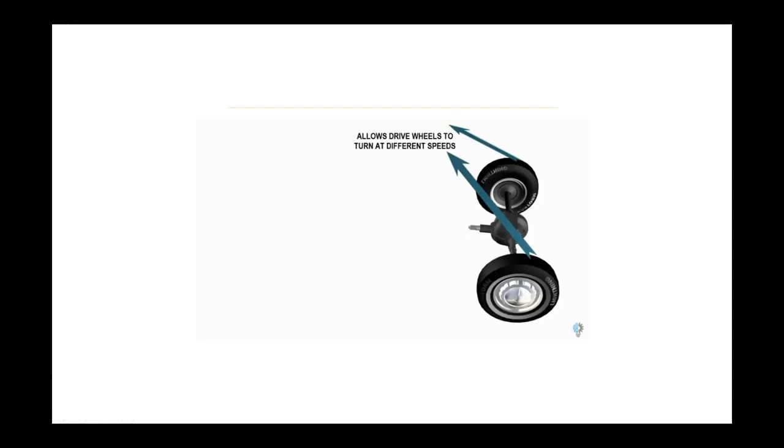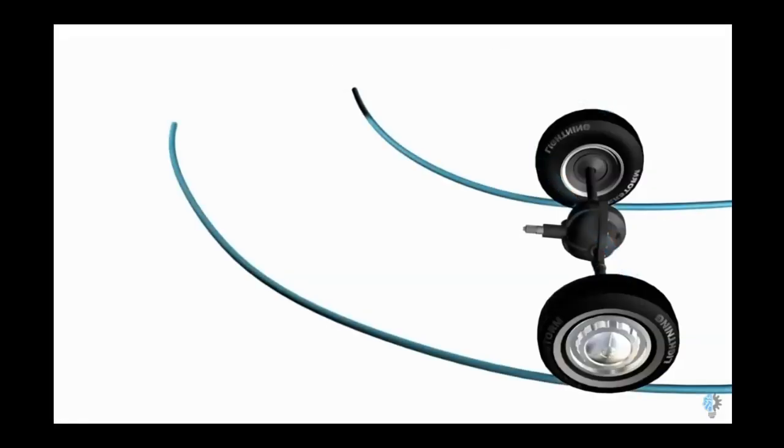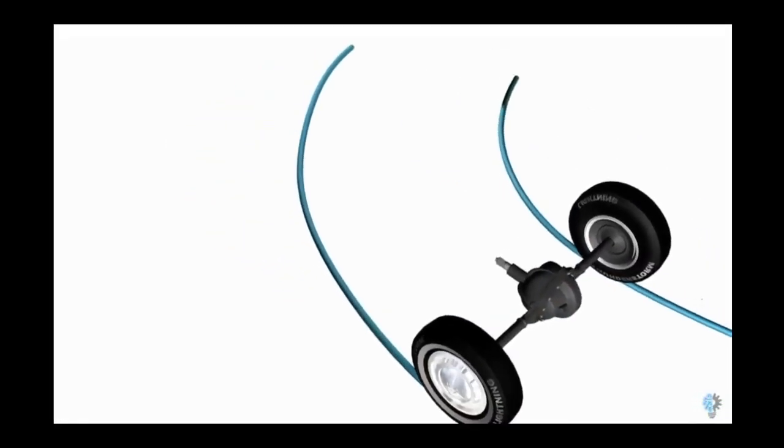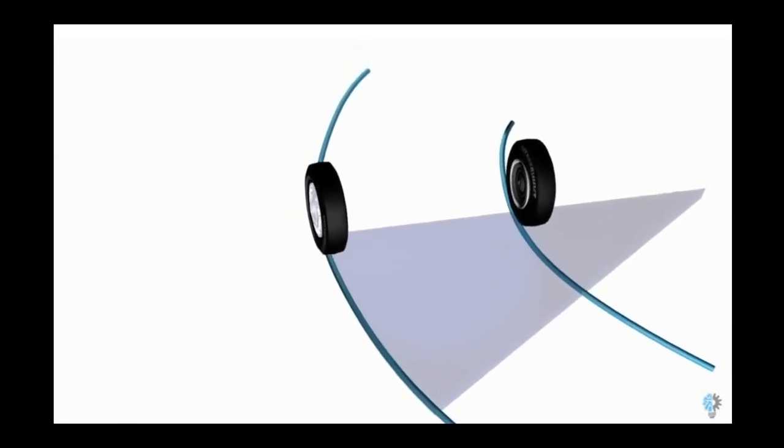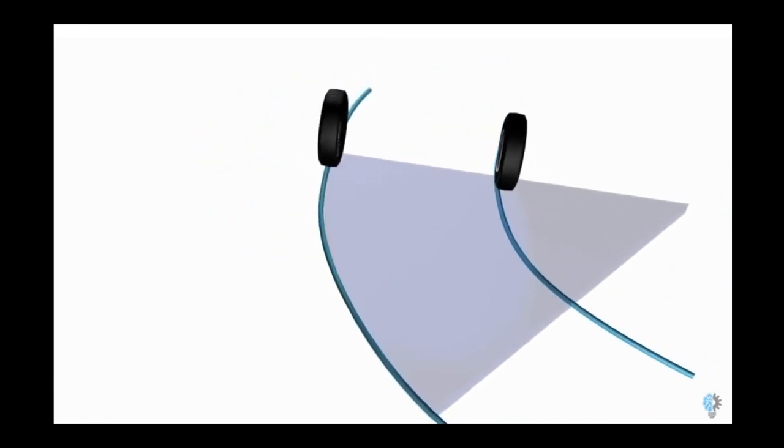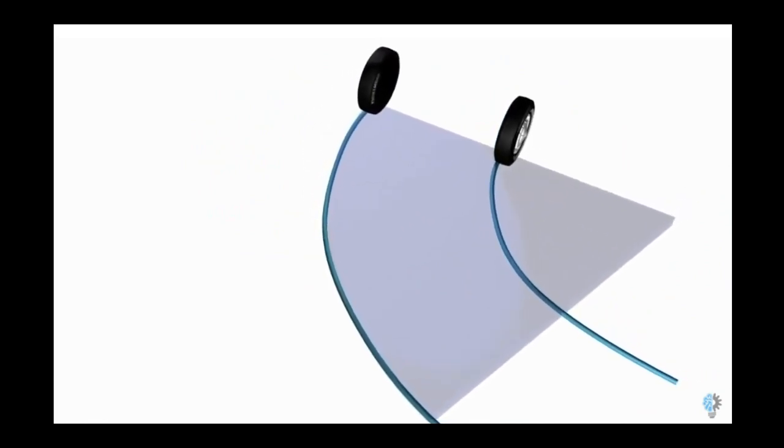The differential in the car just mentioned is shown more clearly here. Consider these wheels which are negotiating a turn. It is clear that the left wheel has to travel more distance compared to the right wheel. This means the left wheel has to rotate at a higher speed.